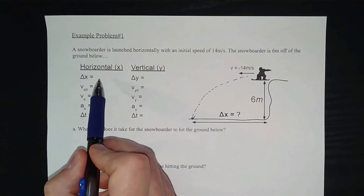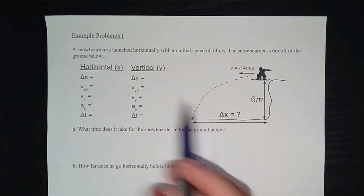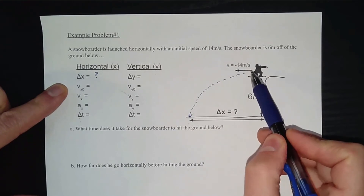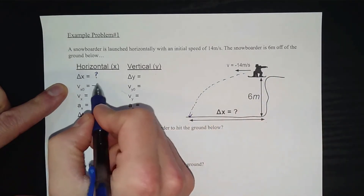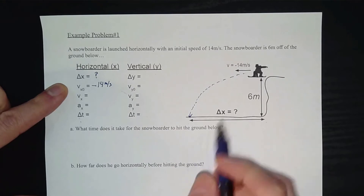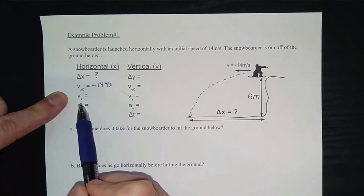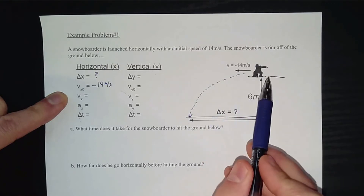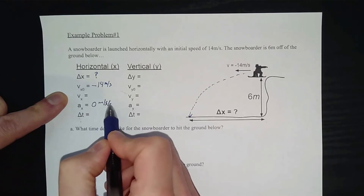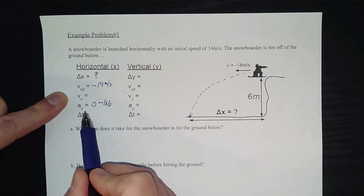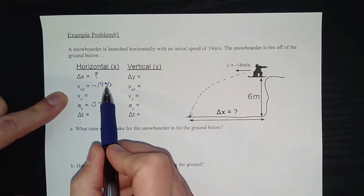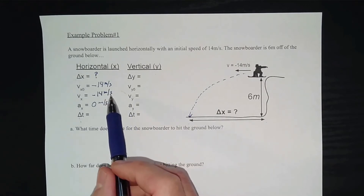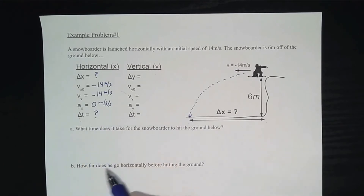For the horizontal information: Part B asks how far it travels horizontally, so that's unknown. The initial horizontal velocity is negative 14 meters per second. Since there are no horizontal forces, there's no acceleration in the x direction — horizontal acceleration is zero. So if their horizontal velocity doesn't change, the final horizontal velocity is also negative 14 meters per second. We don't know how much time they spend moving at that speed.